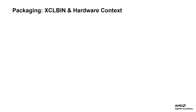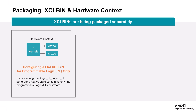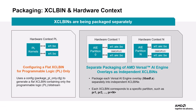Now that we've seen how the packaging process is handled, let's understand what this structure really enables. By separating the PL-only XCL bin and AI Engine-only XCL bins for each partition, we're adopting a modular and flexible deployment strategy. This means we no longer need to repackage the entire system every time a single AI Engine graph changes. Instead, we can compile, package, and deploy just the affected partition, saving significant time and improving development efficiency. In this process, we use a configuration file, package_pl-only.cfg, to generate a flat XCL bin containing only the programmable logic bitstream, isolating the PL resources for specific applications.